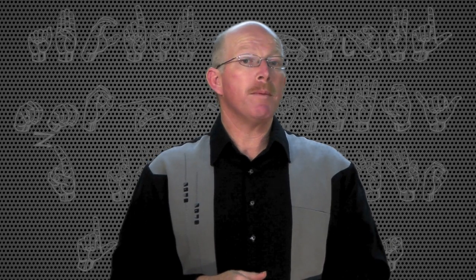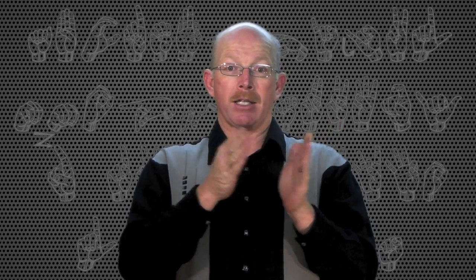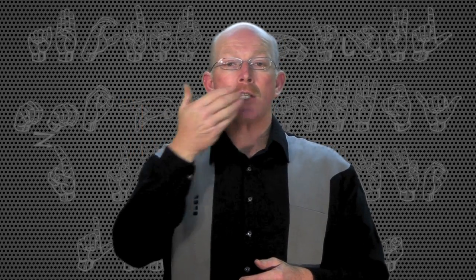Now for good, better, and best — it has its own way of doing it. Good is like this, better is just straight across, and then best. Good, better, best. You could say 'the most better' — of course we wouldn't say that in English — but sign language does have its own sign for it, and that is best. So: good, better, and then best.